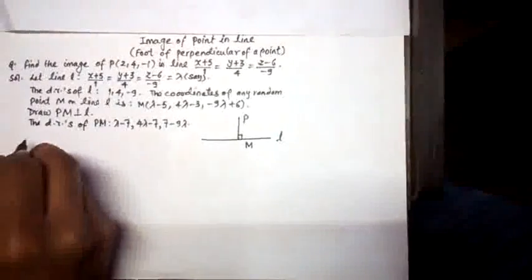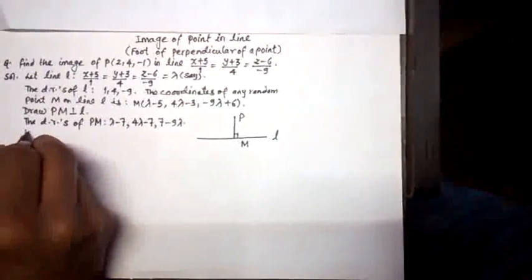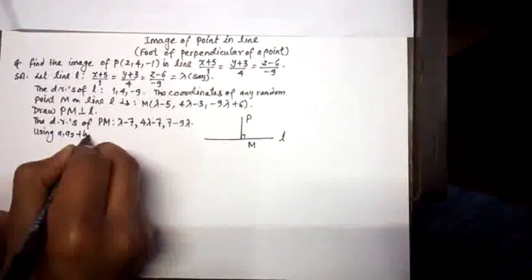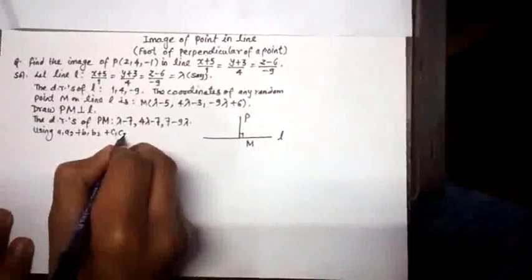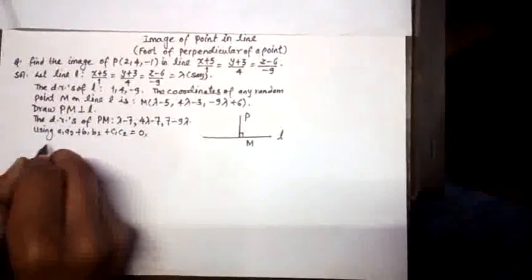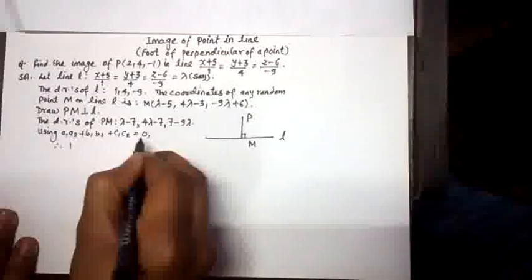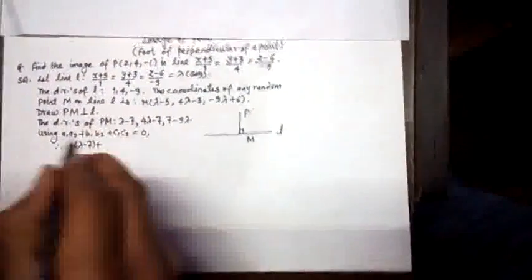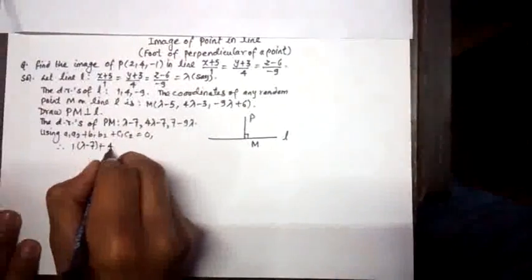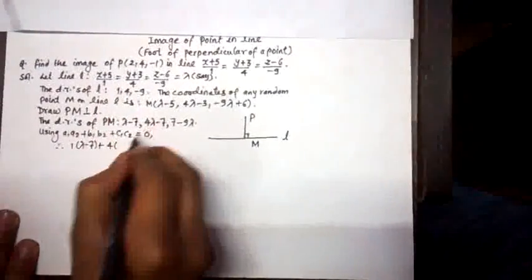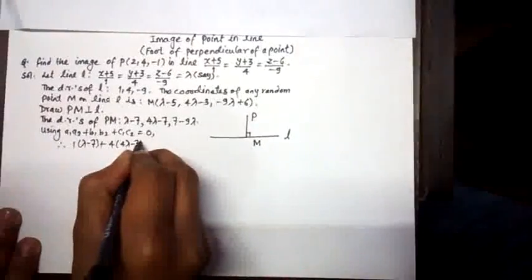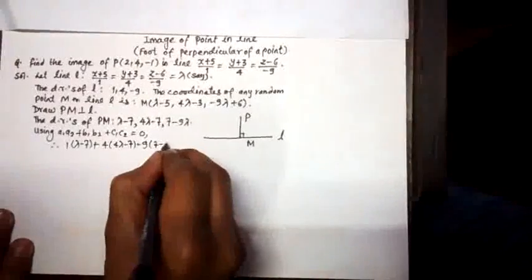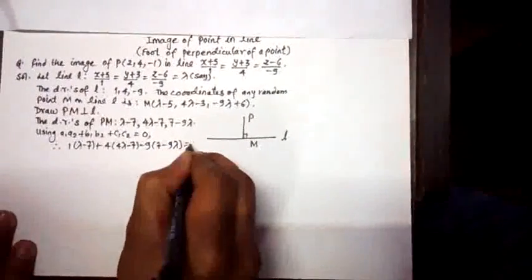Now, since we know the relation a₁a₂ + b₁b₂ + c₁c₂ = 0, we have 1×(λ-7) + 4×(4λ-7) - 9×(7-9λ) = 0.